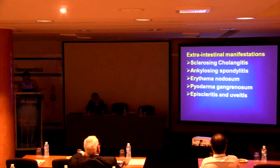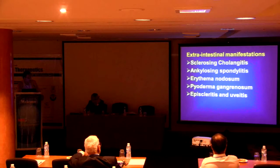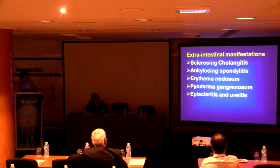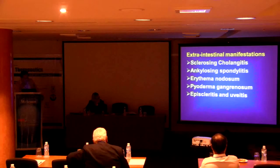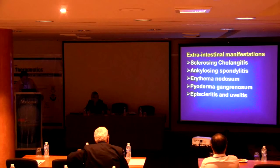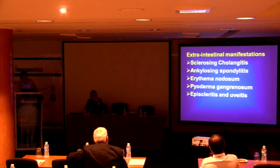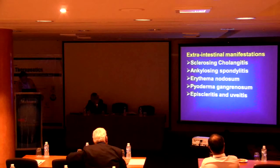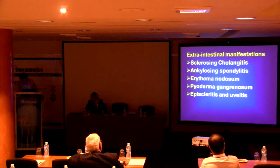Sometimes Crohn's disease presents with extra-intestinal manifestations, and these may be early manifestations appearing before the intestinal lesions — in the form of sclerosing cholangitis, ankylosing spondylitis, erythema nodosum, pyoderma gangrenosum, and episcleritis and uveitis.